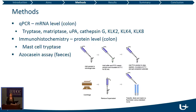We performed qPCR to look at mRNA levels in colon samples. We examined several serine proteases: tryptase, matriptase, uPA, cathepsin G, and kallikreins 2, 4, and 8. This panel was chosen based on the inhibitory profiles of the serine protease inhibitors used in our previous studies. We also performed immunohistochemistry to assess protein levels in colon samples, specifically for mast cell tryptase. Finally, an azocasein assay was performed on fecal samples to measure protease activity — when proteases digest casein, the azo dye is released and quantified by spectrophotometry.